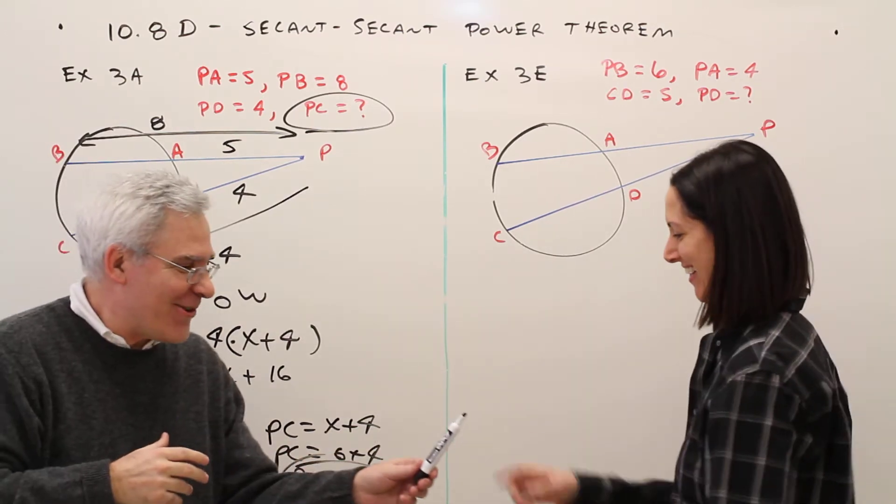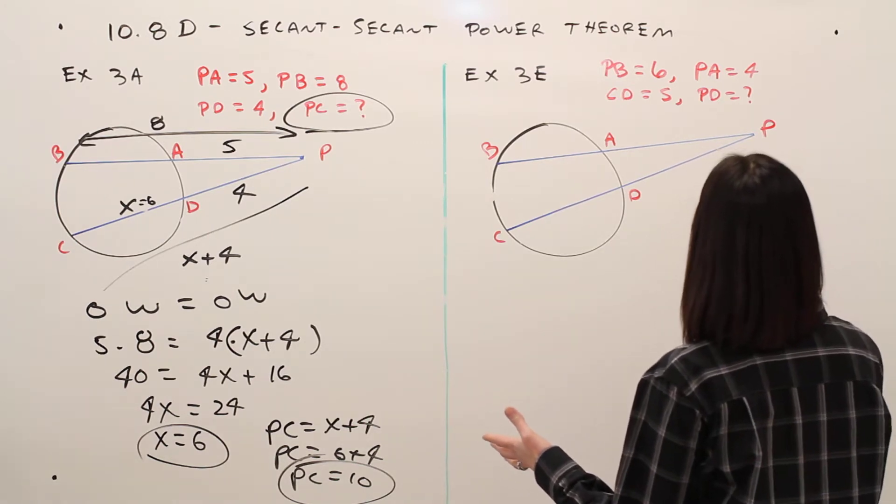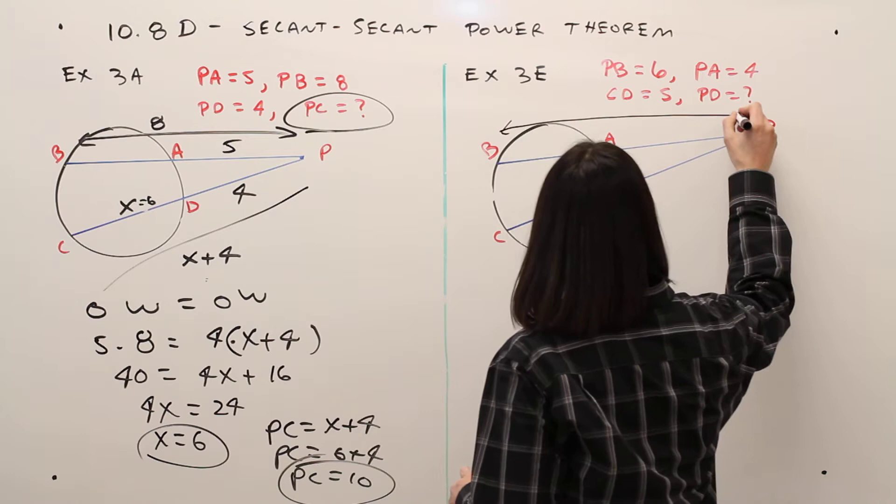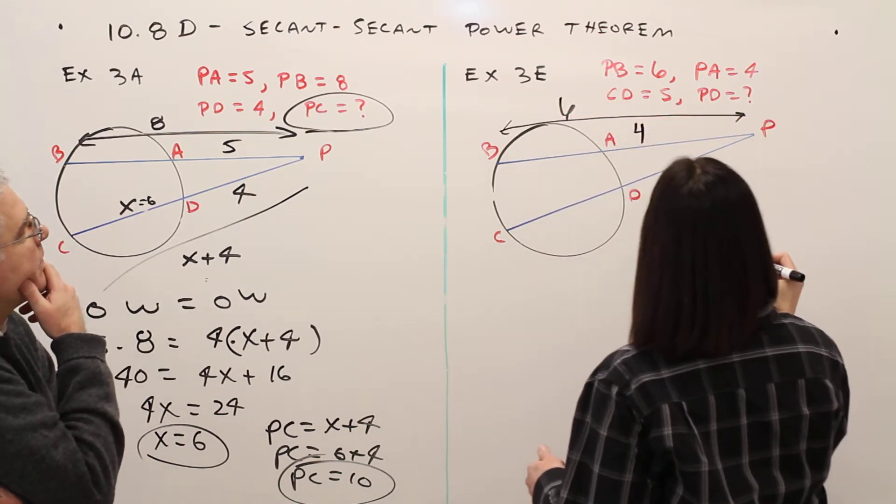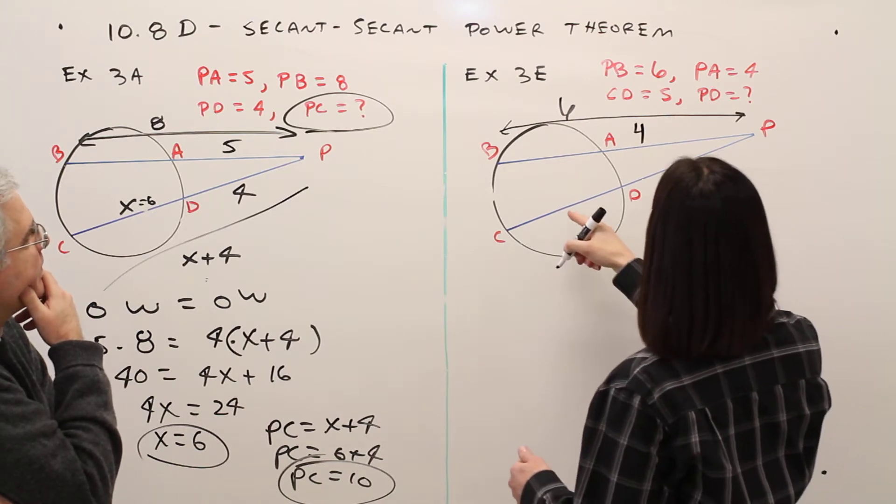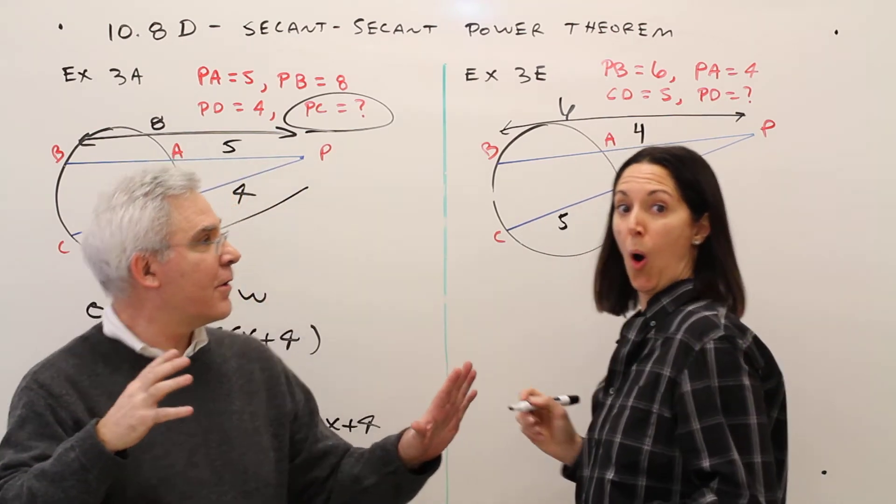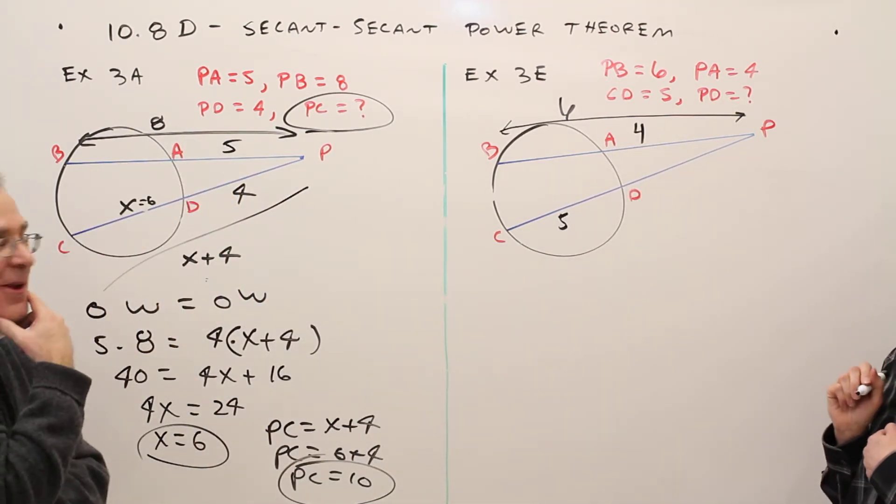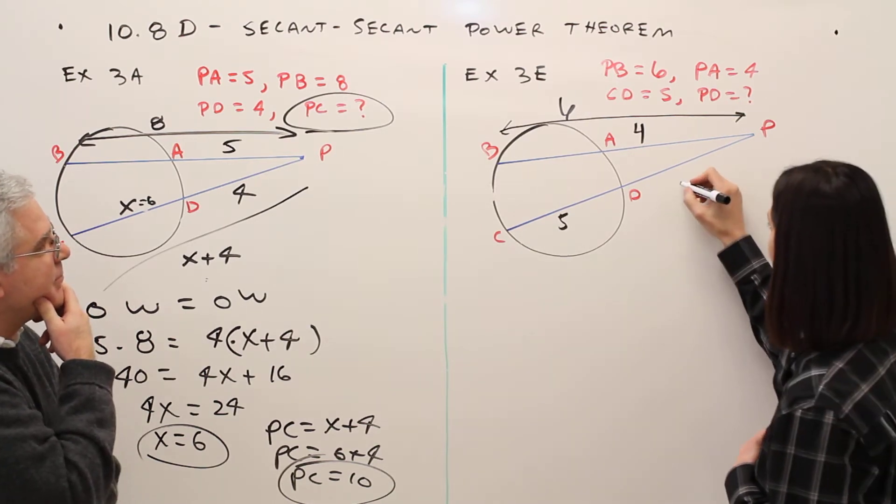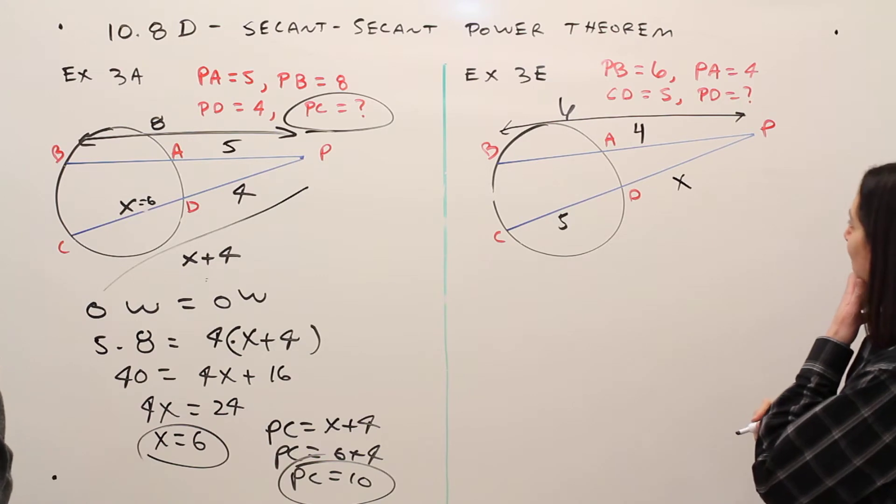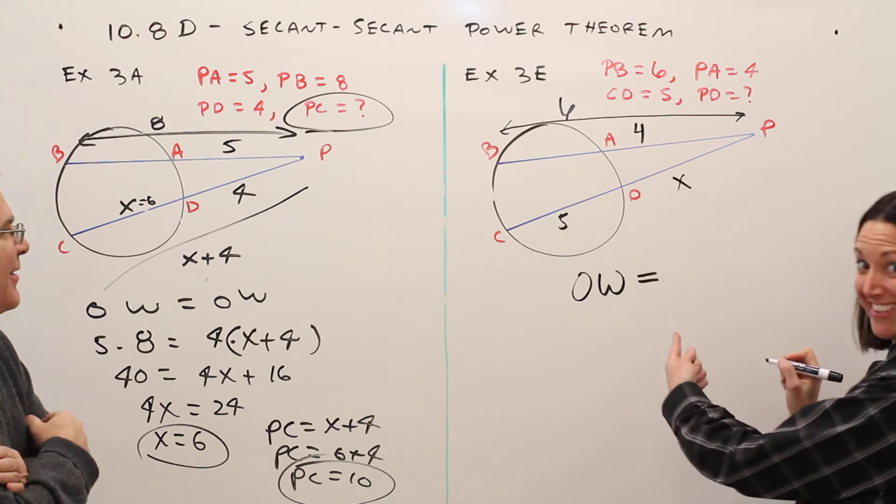Now I'm nervous. That's alright. Why don't you try it? Alright. So let's see what we've got here. Looks like the same type of problem. So I'm going to label. PB is 6, and I know PA is 4. CD is 5. And I'm trying to find PD, so I'm just going to call that X here.